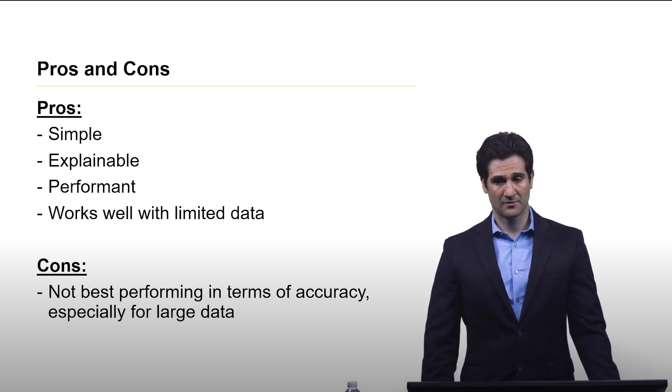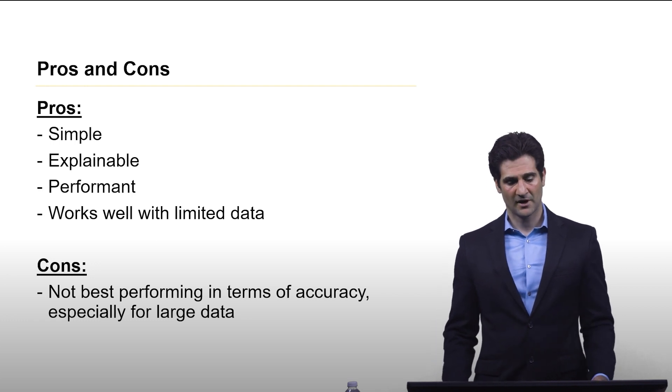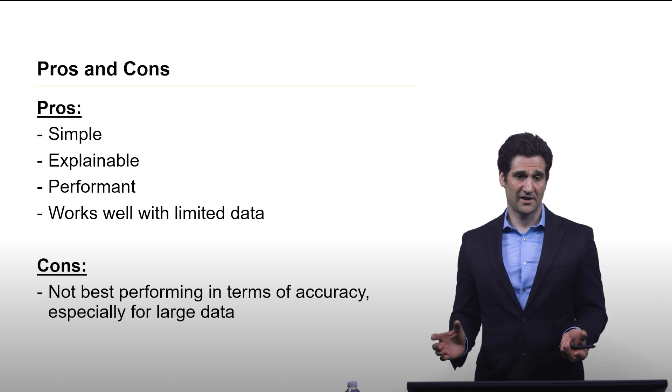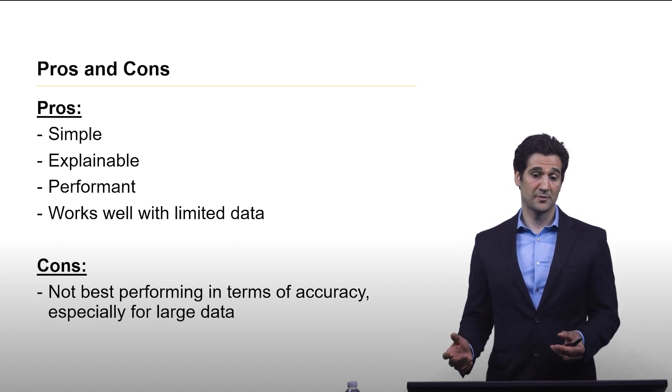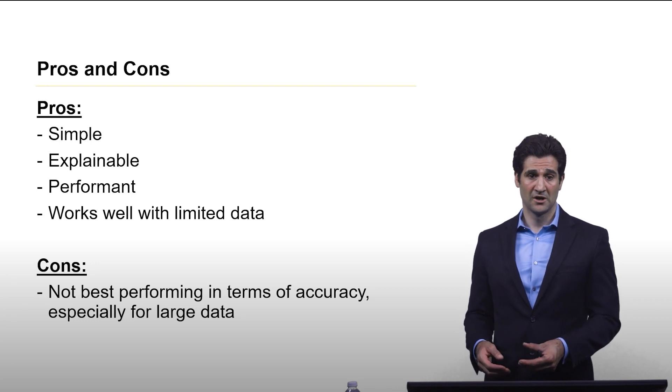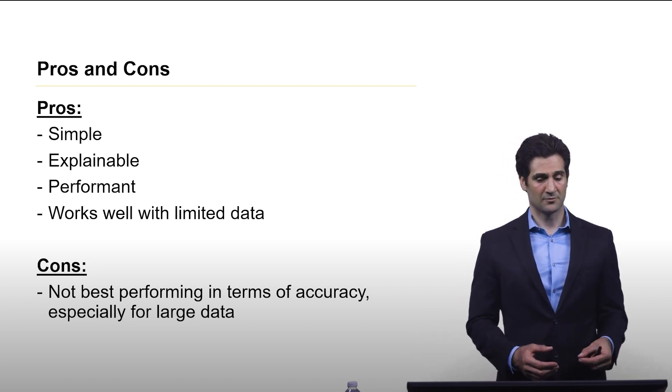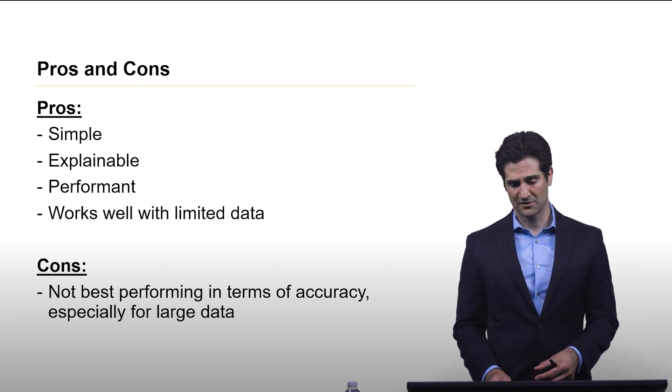Decision trees are also well known to be highly performant. They work fast. The training process can be relatively quick, as same with inference. They also can work well with relatively small amounts of data. However, they do suffer in terms of accuracy, especially against state-of-the-art methods, although there's been some advances in decision trees with related approaches such as the random forest model and gradient-boosted decision trees that actually go a long way in addressing some of the accuracy concerns.